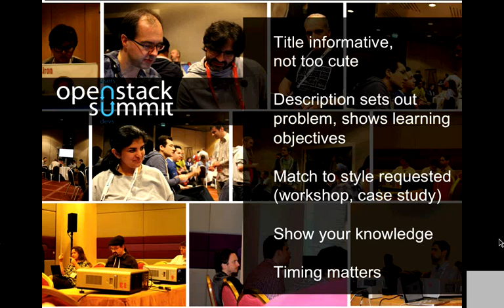This is a general overview for any conference you're going to submit a proposal to: make sure you understand the format. OpenStack has a very unique format, but these are general guidelines. Make sure your title is something you can remember but doesn't get too cute. Set out the problem and tell people what they will learn. Match the proposal to whatever is being requested — both the overall conference themes and the specific format. If you're doing a 90-minute workshop, your outline needs to show that you understand the timings of a workshop.